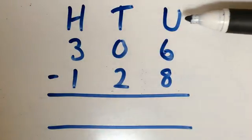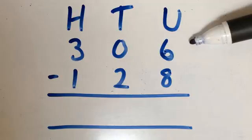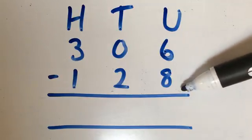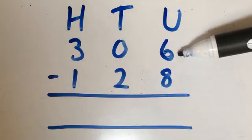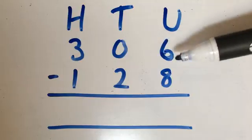So again, numbers are all underneath each other in the correct columns. We're starting with the units column, and we're making sure that we're doing the top number take away the bottom number, not the other way around. So 6 take away 8, we can't do. We've got to borrow from the next column.